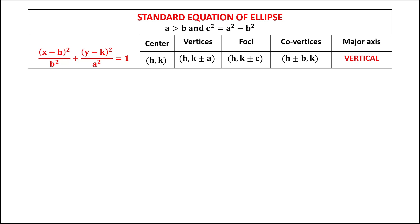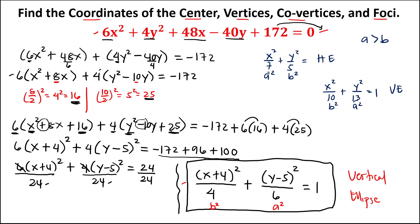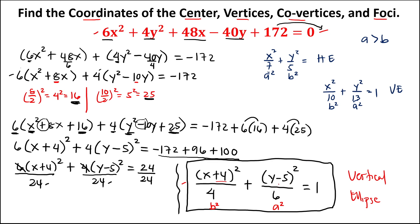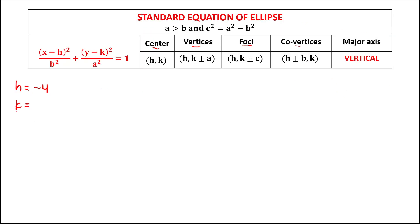Using the formula for a vertical ellipse, we find the five key values. From the standard equation, h = −4 and k = 5 (the center coordinates). The sign of (x + 4) gives h = −4, and the sign of (y − 5) gives k = +5.